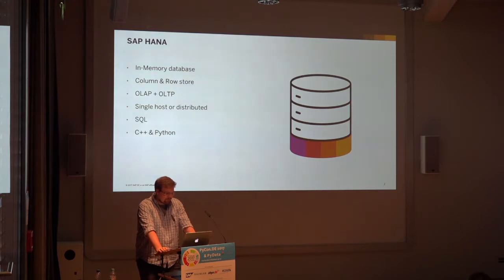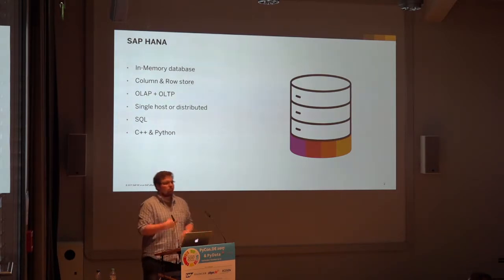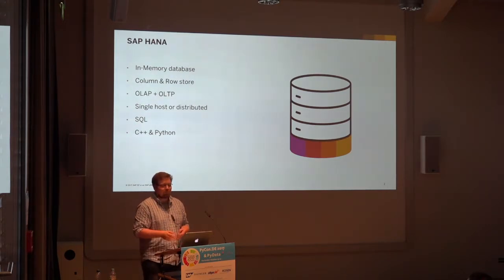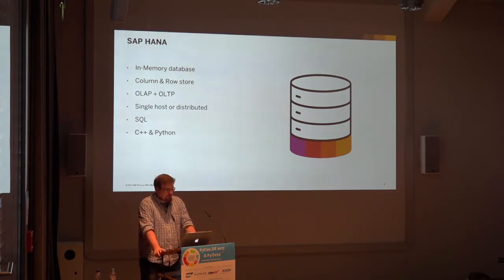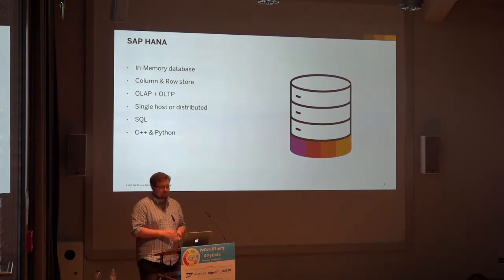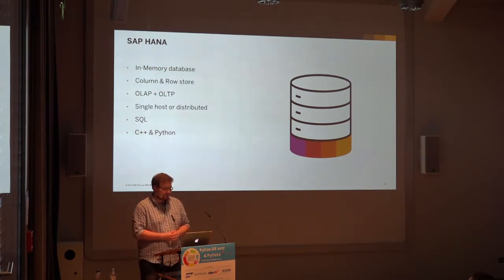To give a very short introduction about HANA itself: it's a column and row store database. You can combine your analytic workload — typical analysis about your data sets — and your transactional workload, for example things like session stores. If you have a session in a web application and you store it in your central database rather than in cookies. In case you are scaling up very quick and fast, we can scale up very well. The most prominent example is PayPal with 48 terabytes of memory in a single-host system.